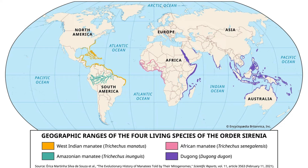There's also the geographical distribution. Dugongs have a very wide range, and they do not live in the Atlantic Ocean. And while manatees also have a pretty large range, this distribution is shared by three fully distinct species.